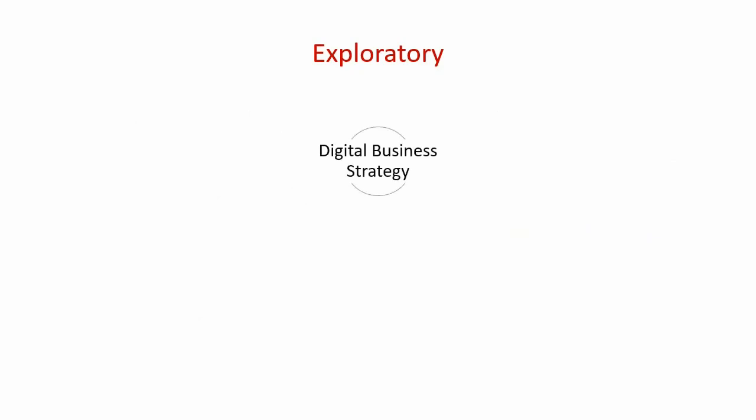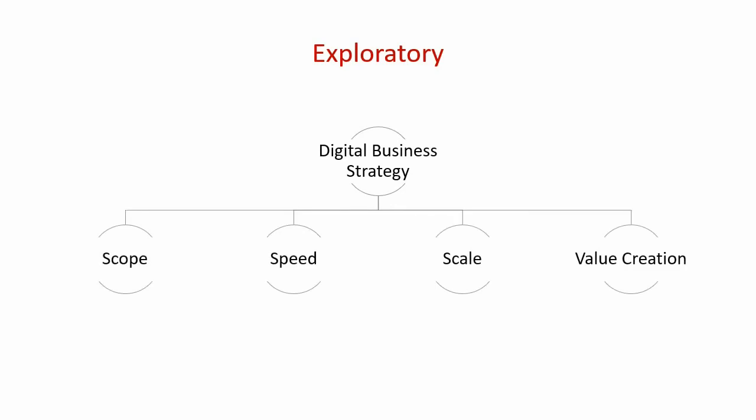Let's look at an example of exploratory research. There is a new phenomenon called the digital business strategy. We don't know much about it, but we've given it a name and we are probing around to see what pops out. So what Dora did in her exploratory research was to answer the question: what is a digital business strategy? Through her exploration, she highlighted that the DBS has four main variables — namely scope, scale, speed, and value creation. She gives a brief description of what she thinks each variable is, but she makes sure that researchers who read her published work understand that there is more work to be done.